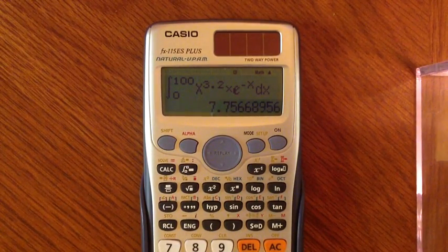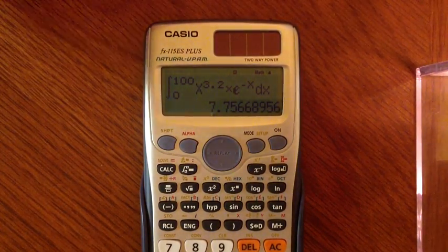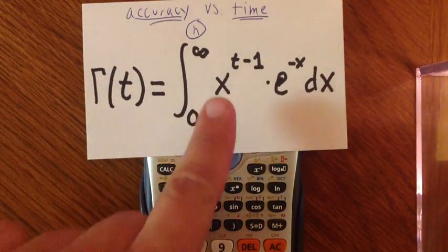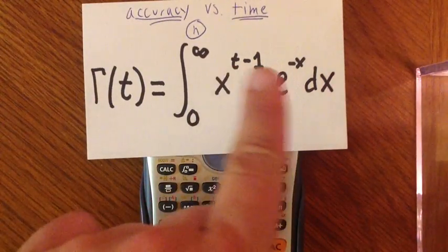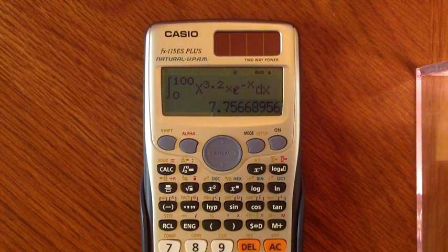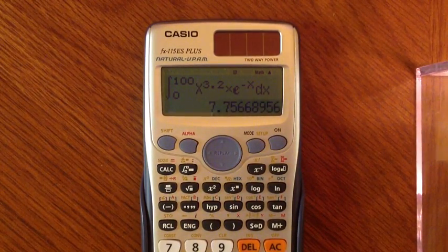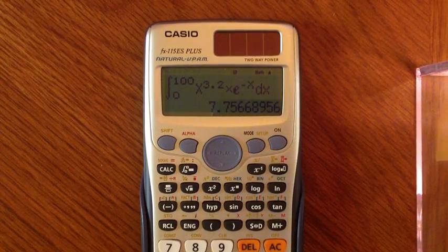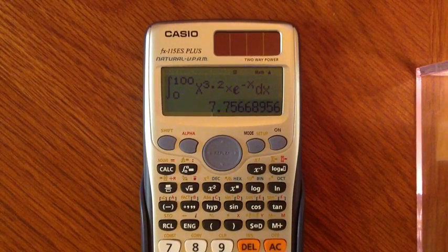Remember, in the definition, gamma of t, you want x to be to the power of t minus 1. So I get an answer of 0.75668956.